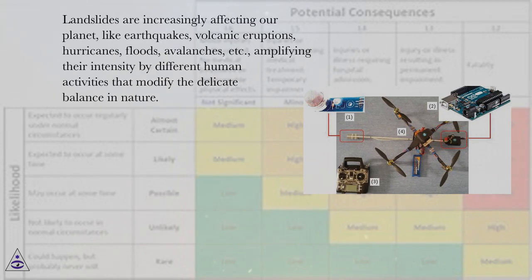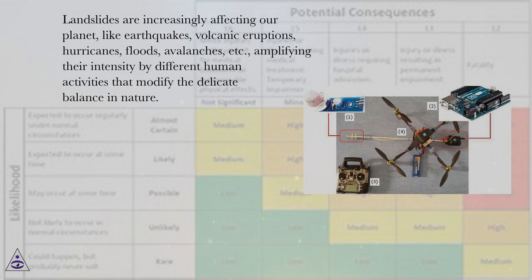Landslides are increasingly affecting our planet — like earthquakes, volcanic eruptions, hurricanes, floods, and avalanches — amplifying their intensity through different human activities that modify the delicate balance in nature.